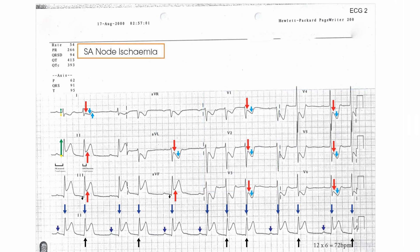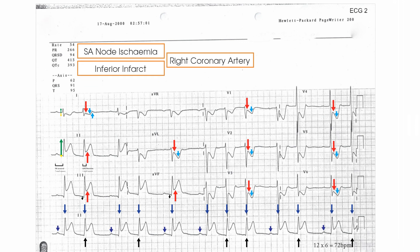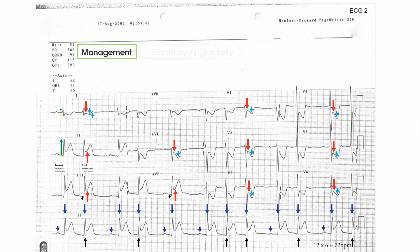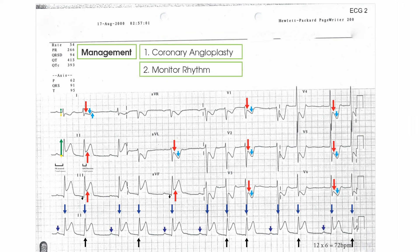The sinus node is frequently supplied by the right coronary artery, which also supplies the inferior aspect of the heart, so the two often go hand in hand. This patient needs an emergency coronary angioplasty. They also need a close eye on their rhythm abnormality and would need to be paced if the block became more profound.